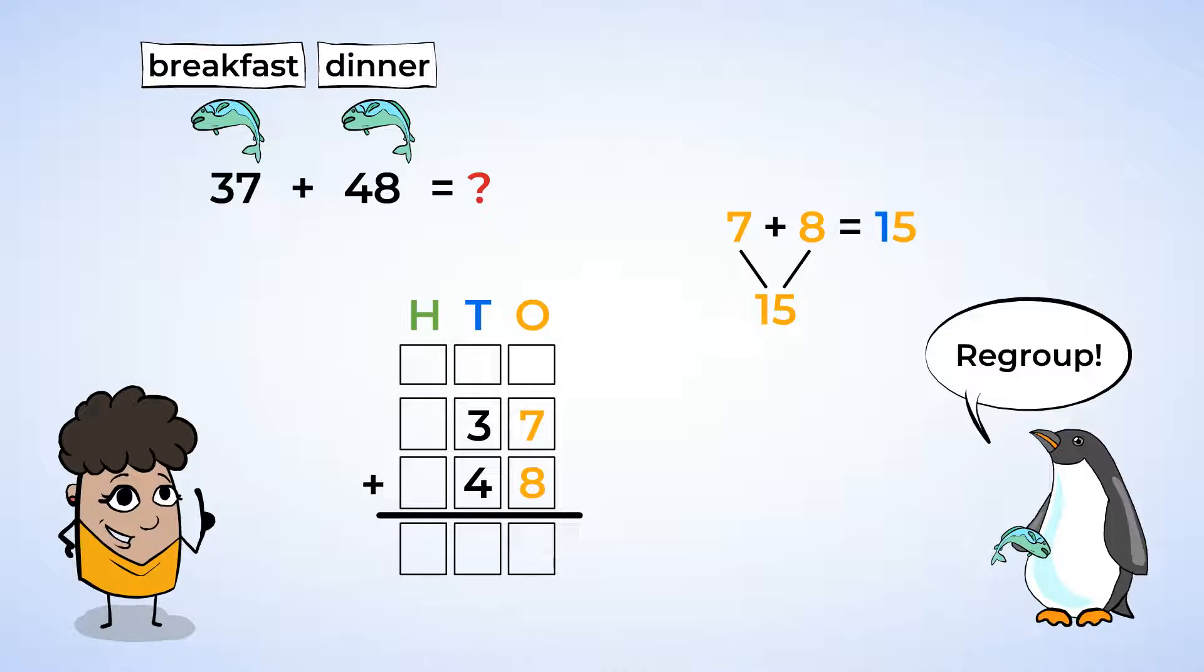Since 15 has 5 ones, we can leave the 5 in the ones place. Then, we can bring this extra 10 to the column with all of the other tens. Now, add the tens. 1 plus 3 is 4, and 4 plus another 4 is 8, so put an 8 in the tens place.